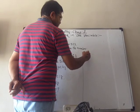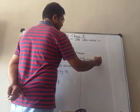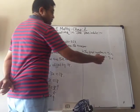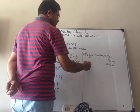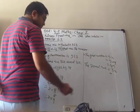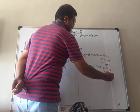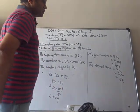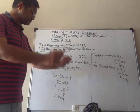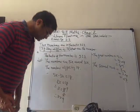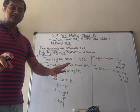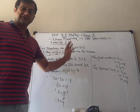Therefore the first number, which we took as 5x, is 5 times 9 equals 45. The second number, taken as 3x, is 3 times 9 equals 27. You can verify: 45 minus 27 equals 18, so your answer is correct. Whenever there is a ratio, we take x with it — generally use x and don't switch to other variables.